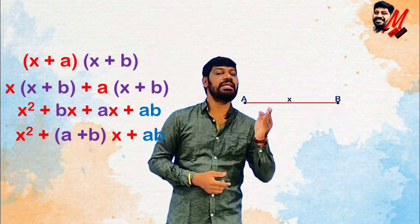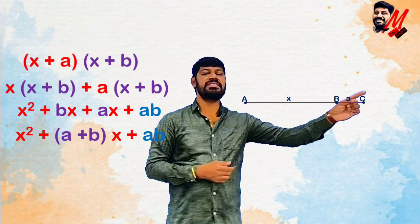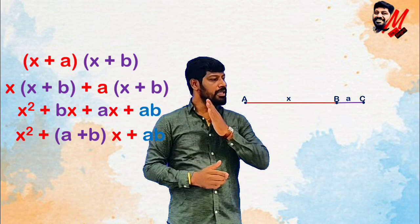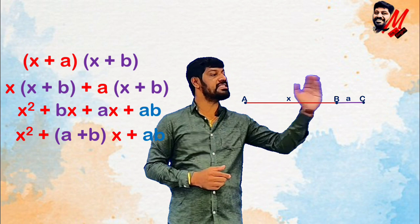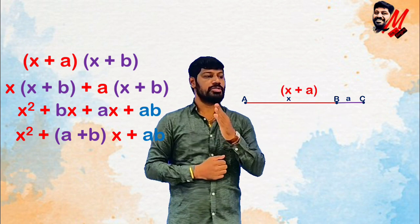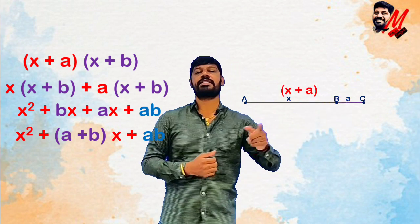So let's start. I have a line segment A, B whose length is x. So the length of x is up to C. The length B, C is a. So the first line segment is A, C. What is the total length? Here is x and here is a, so the total length of AC is x plus a.